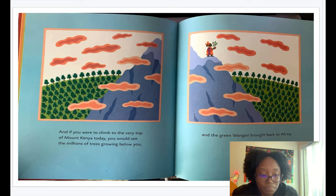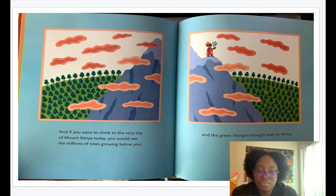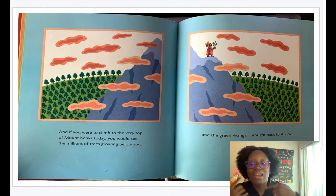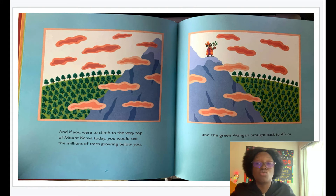Let's read our last pages. And if you were to climb to the very top of Mount Kenya today, you would see the millions of trees growing below you and the green Wangari brought back to Africa. On these last two pages, how does the author let us know this is a true story? The author lets us know it's a true story because he tells us that if we were to climb to the top of Mount Kenya today, we would see millions — that's a very large number — of trees growing below the mountain. That's how we know it is a true story.